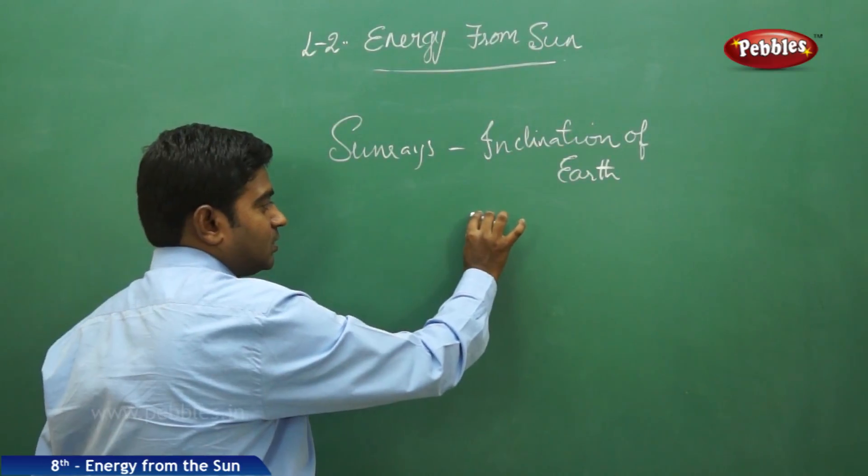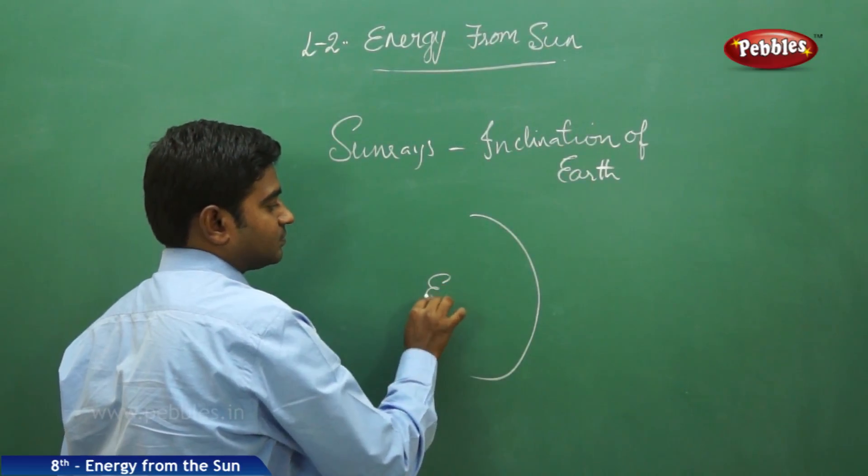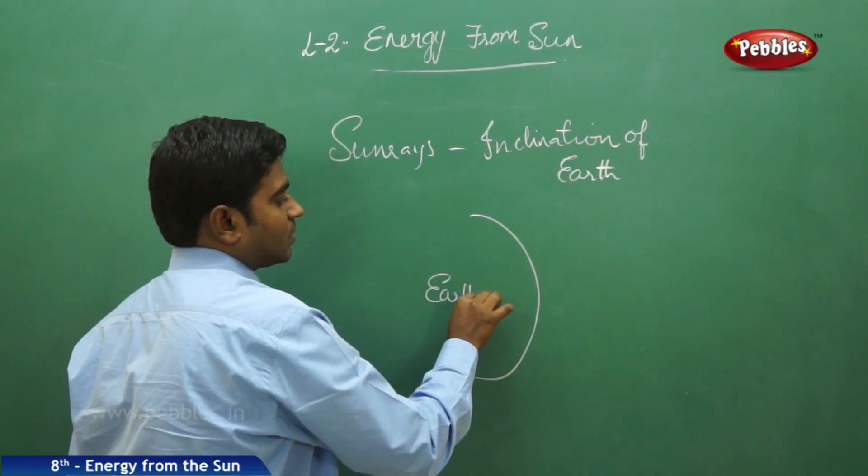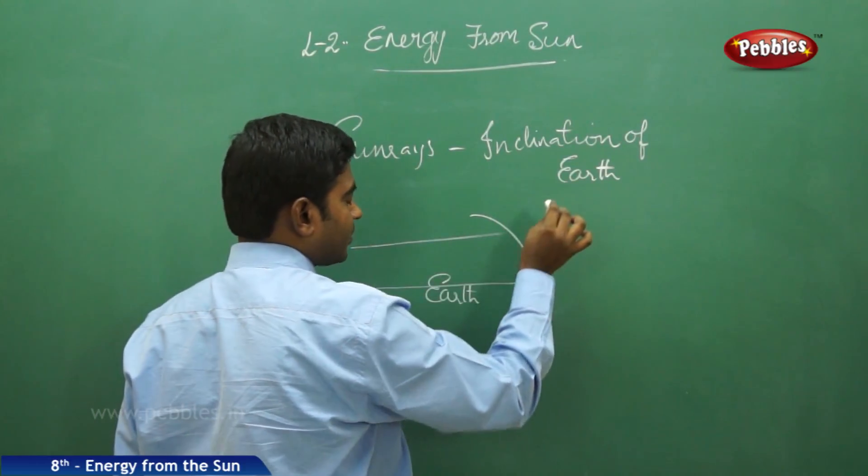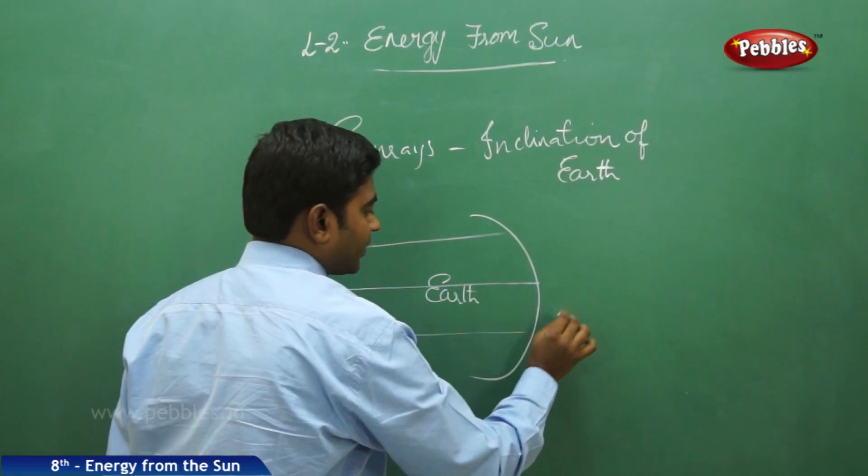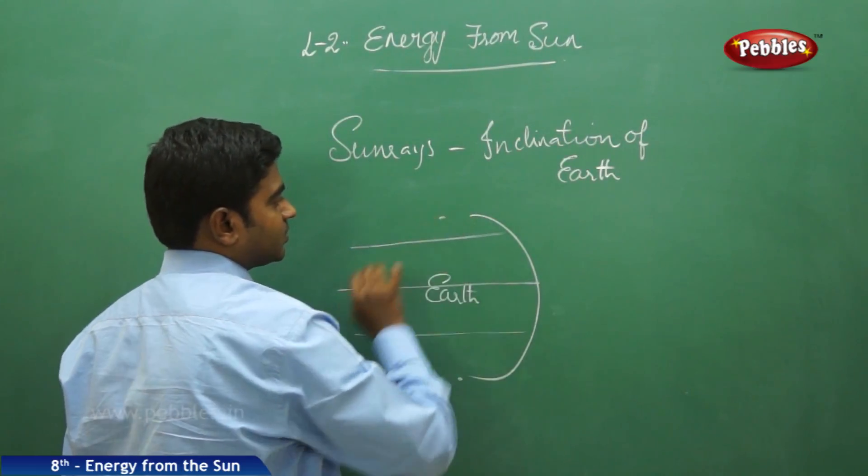Imagine that this is a part of the earth where this would be an imaginary equator line, this would be the tropic of Cancer, the tropic of Capricorn, and this would be the poles region.